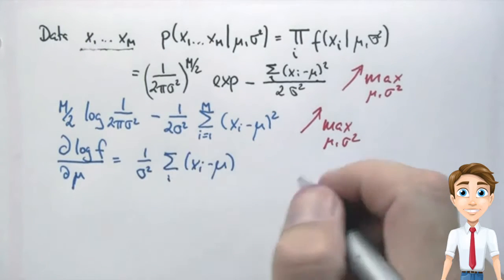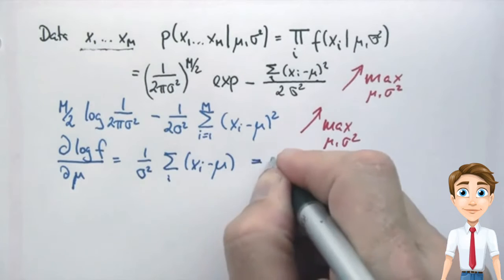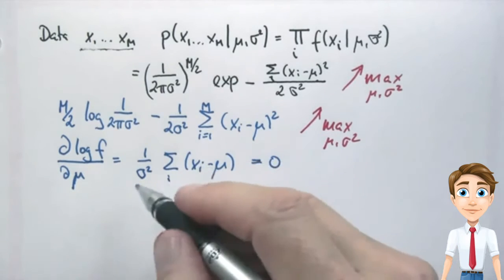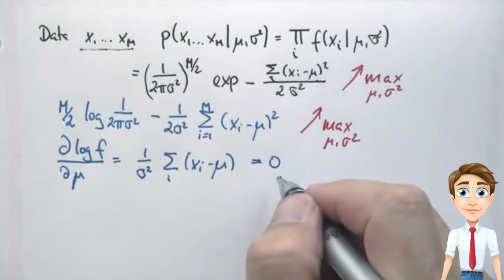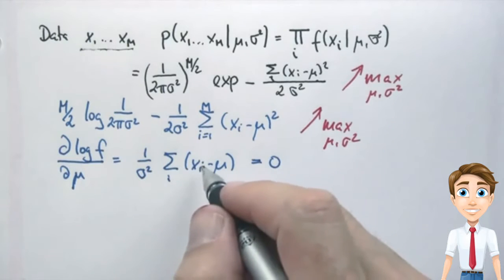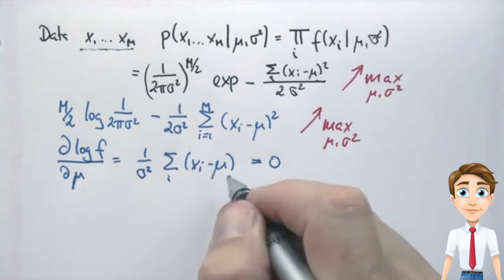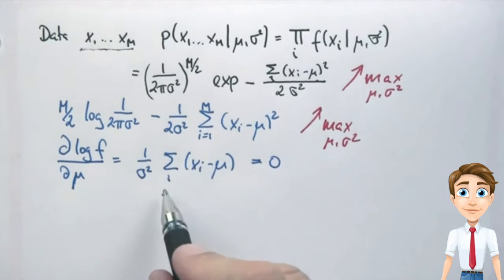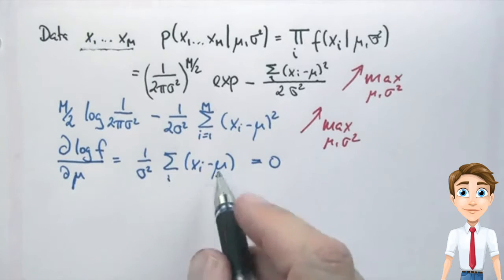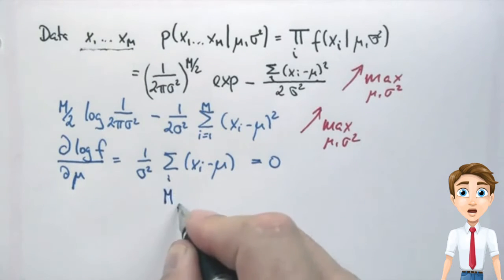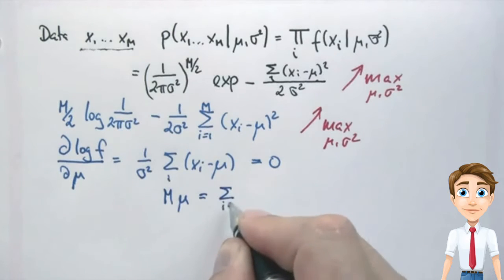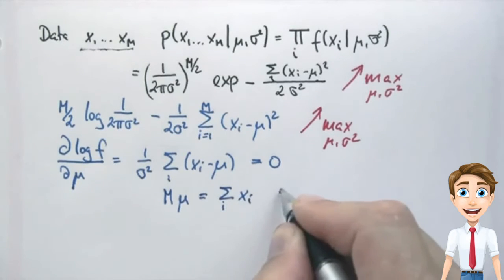And we instead get this expression over here, which we set to zero. Now we can multiply everything by sigma squared, it's still zero, and then bring the xi's to the right and the mu to the left. Sum over all mu's is m times mu equals sum over i xi. Hence,